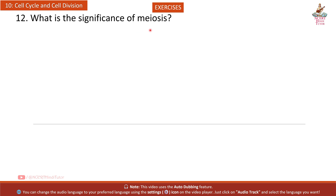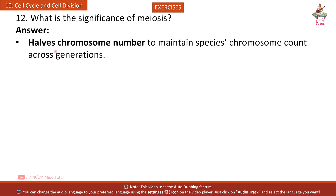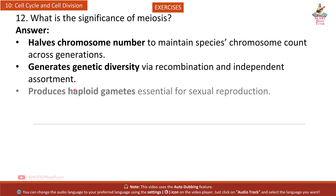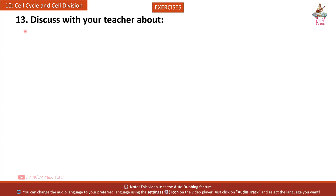Question 12: What is the significance of meiosis? It maintains the species chromosome count across generations, generates genetic diversity via recombination and independent assortment, and produces haploid gametes essential for sexual reproduction.